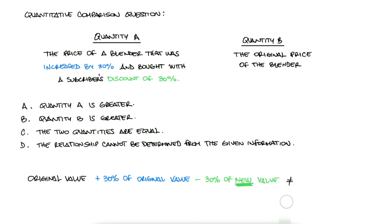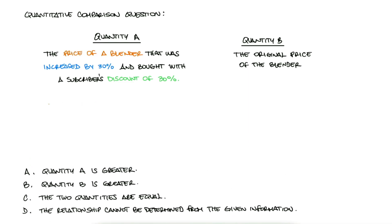In other words, a 30% increase followed by a 30% decrease does not result in the same original price. Once the blender's price, B, is increased by 30% of its price, or 0.3B, the new price is 1.3B.